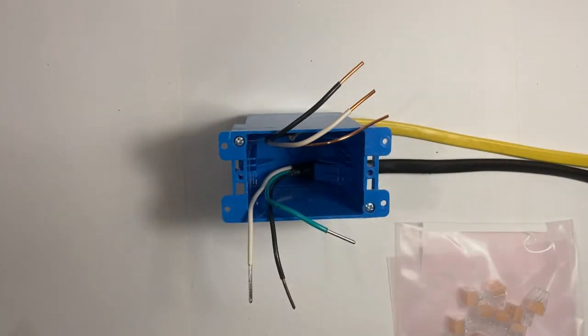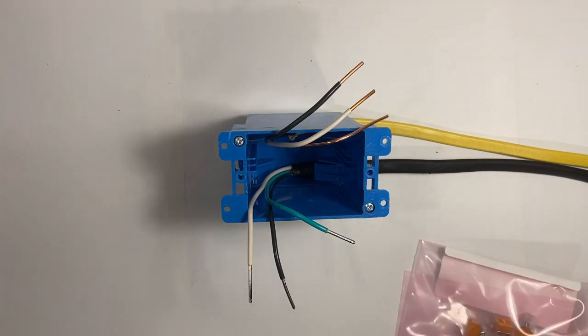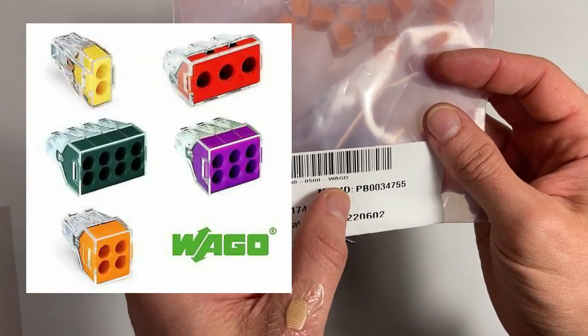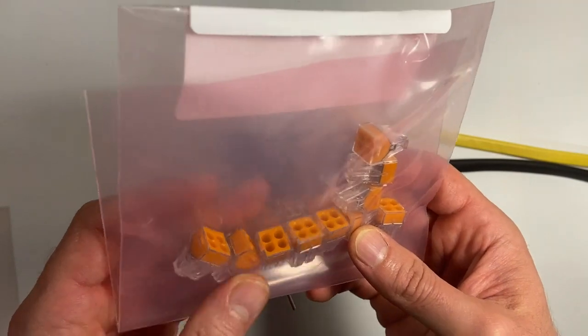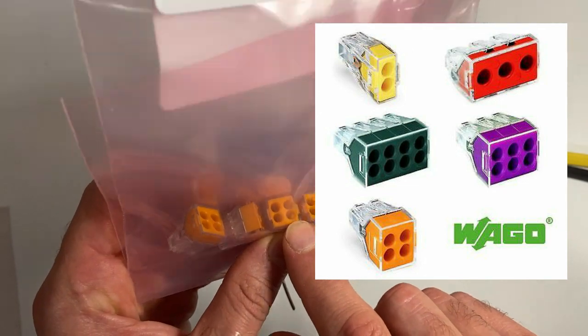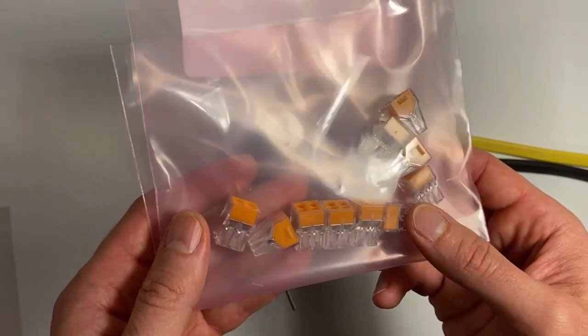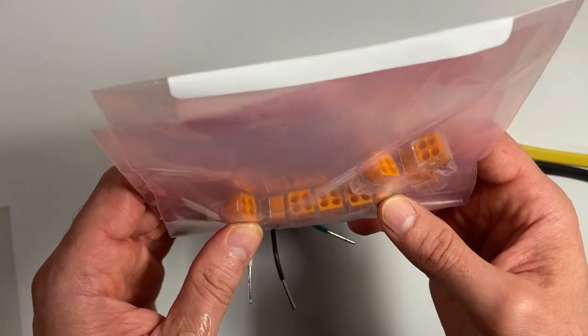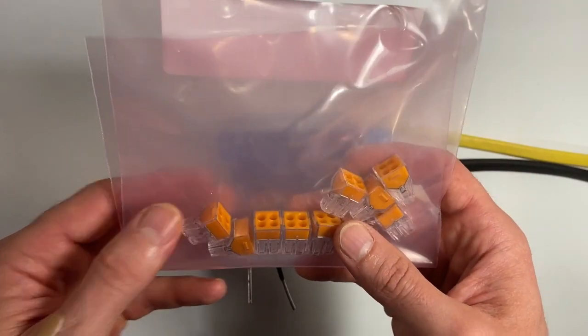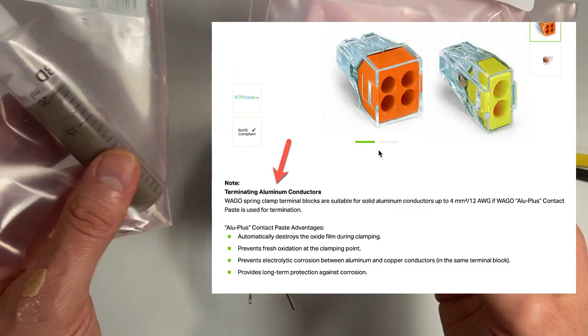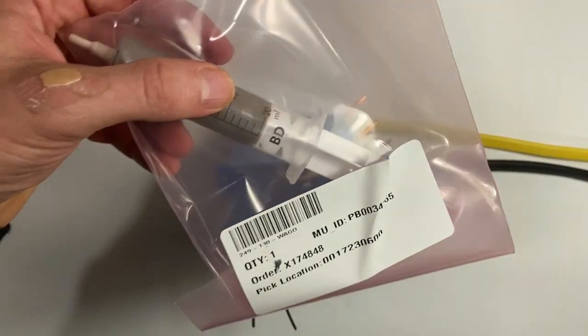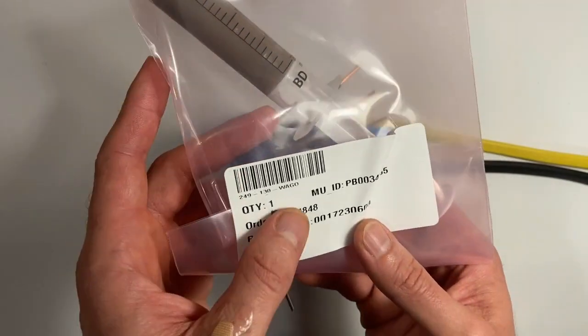And last but not least, these are Wago, W-A-G-O. They're made in Germany. They come in all different configurations. You may have seen them red color with just two ports. These are four-port ones. They are used for copper all the time. You can use 14 or 12 gauge copper in these. But according to the manufacturer, they are also approved to be used with 12 gauge aluminum wire.